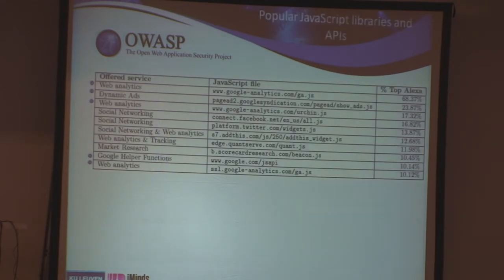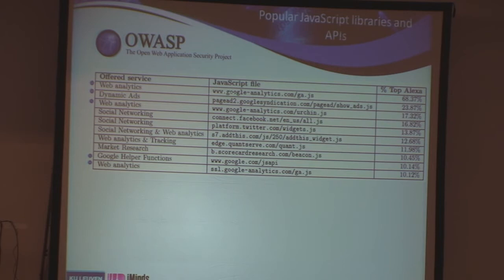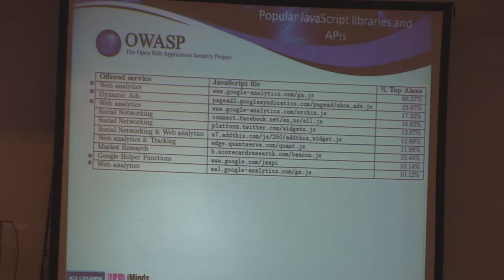Which scripts were included? This is the top 10 most popular scripts included in the study — you see the usual suspects: analytics, social media integration, advertisements, market research. The top one, Google Analytics, was included in almost 70% of the websites. And five of the top 10 came from Google, which means if Google actually wanted to own worldwide websites, with one click they could bring down 75% or more of websites worldwide — they can own any client-side part by using those libraries.